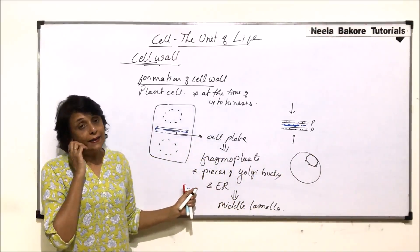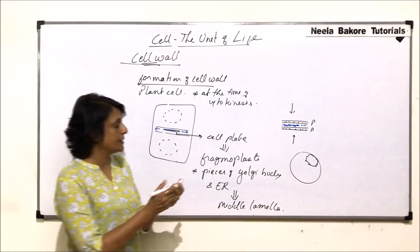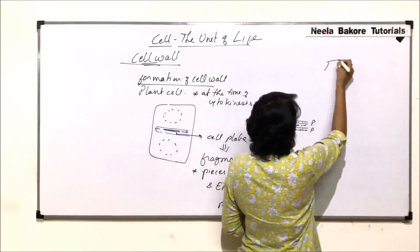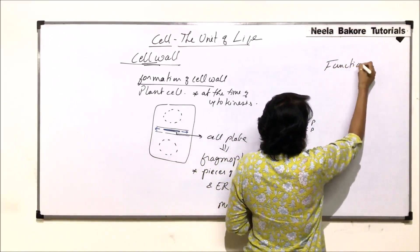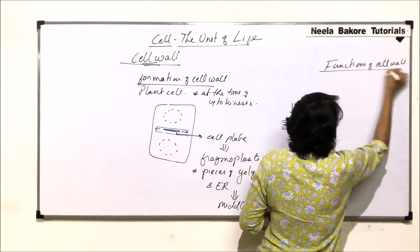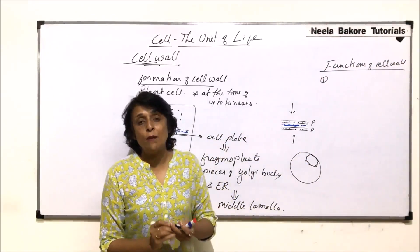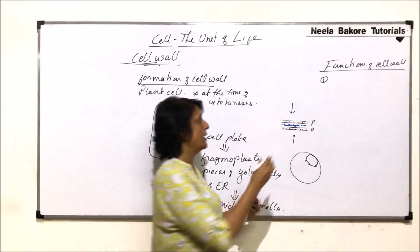This is how and the time when this cell wall is produced or synthesized. Now when we come to functions: cell wall is a rigid structure so it provides the framework shape to the cell. We can write it provides shape to the cell.